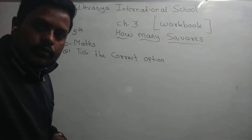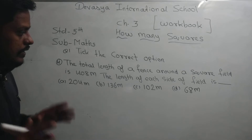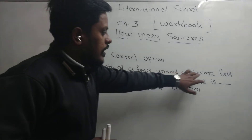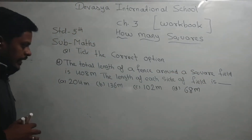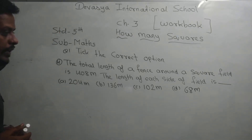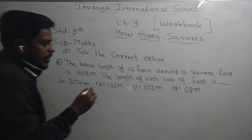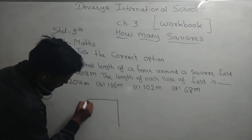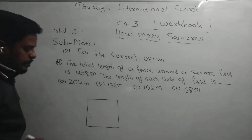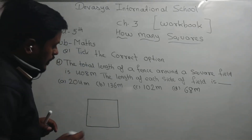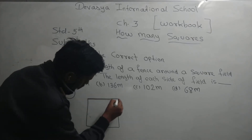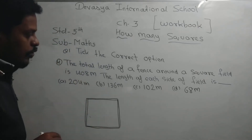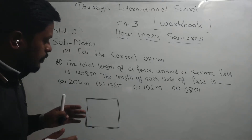Now students, first of all, just read the question. The total length of a fence around a square field is 408. The length of each side of the field is dash. Now, the field is in a square shape. Here we have a field — we have to cover the whole field.